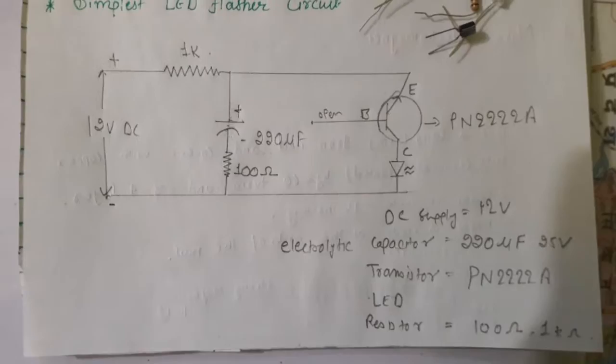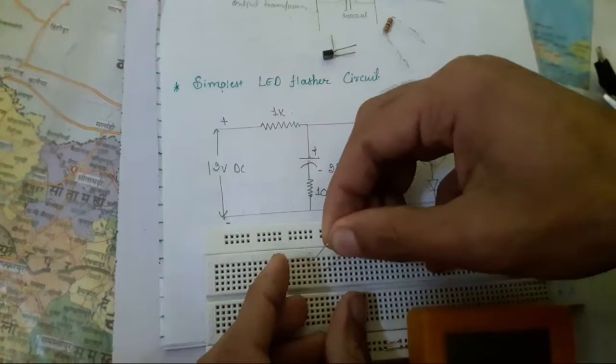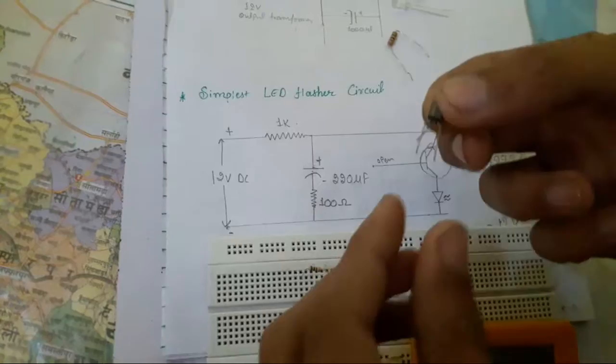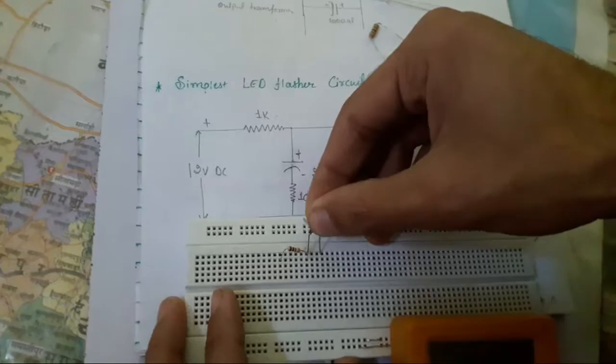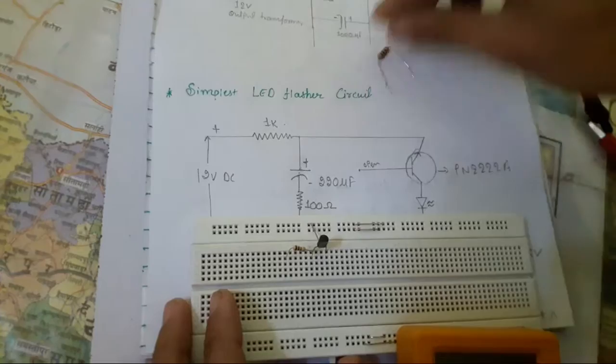Let us put the resistor at this place, and second is a transistor PN2222A with base attached, and it will go here. Then an LED, positive this side.